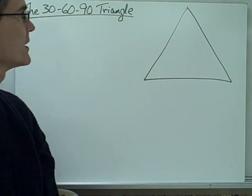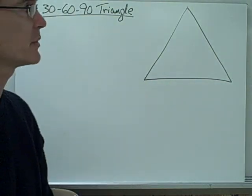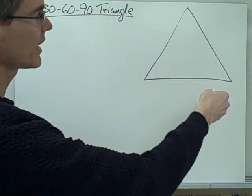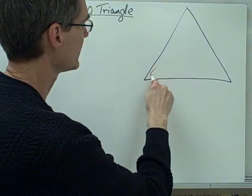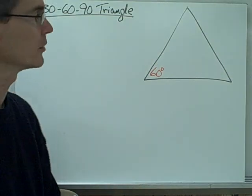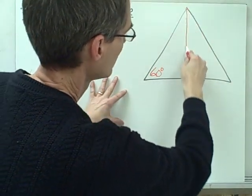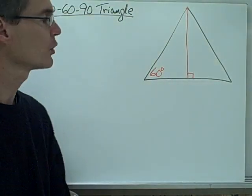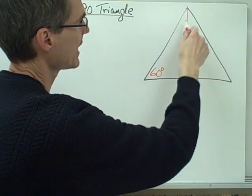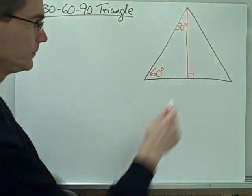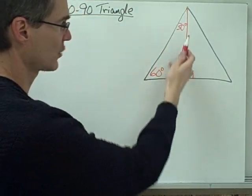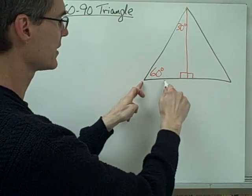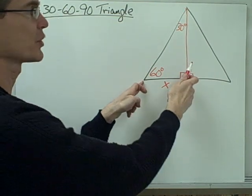The 30-60-90 triangle is the second special triangle. Just like with the 45-45-90, we want to find the ratio of the side lengths. We start with an equilateral triangle — all angles are 60° and all sides are congruent — and draw an altitude, which is 90°. This altitude divides the equilateral triangle into two congruent right triangles and splits the 60° angle into two 30° angles, giving us a 30-60-90 triangle.